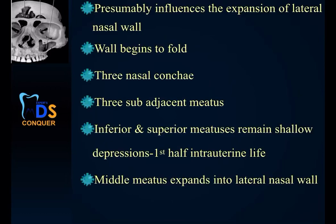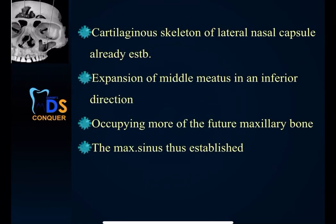The inferior and superior meatus remain as shallow depressions in the first half of intrauterine life, while the middle meatus expands into the lateral nasal wall. Then the cartilaginous skeleton of the lateral nasal capsule gets established, followed by expansion of the middle meatus in an inferior direction, occupying more of the maxillary bone. At the end, the maxillary sinus gets established. You can write this sequence or refer to your embryology textbook.